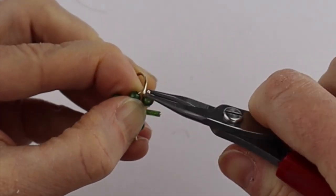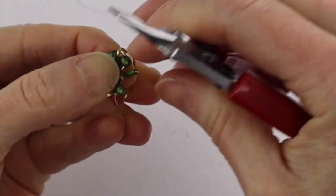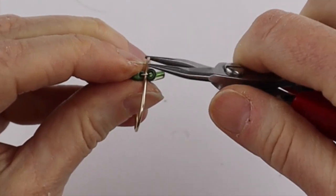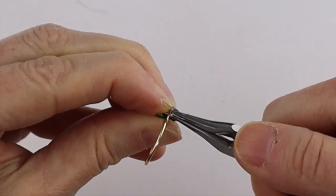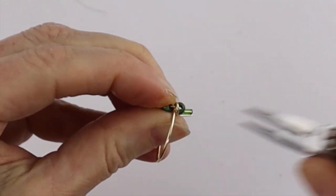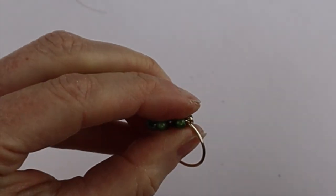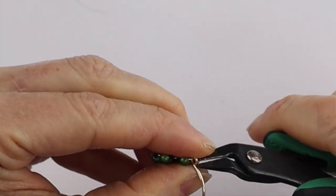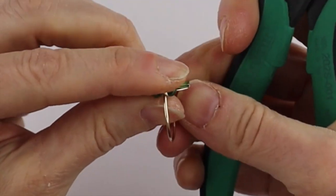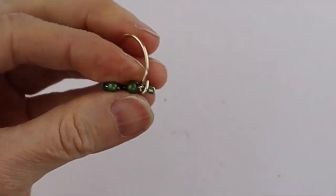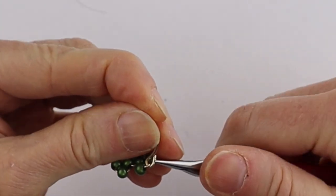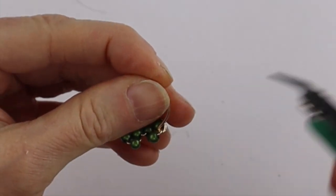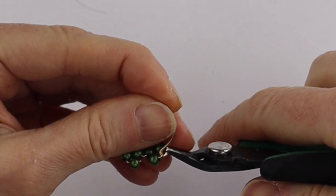Then just take your pliers and bend this around. Bend the wire around like that. Then you can trim it to how you want it. Just cut it in there flush. And the same thing here. If you want to tighten up that loop a little bit, you can. Then just cut this flush in there.